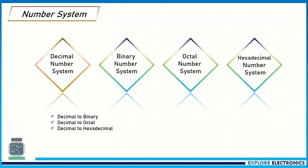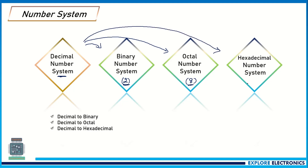First, let us see the rules behind conversion of a decimal number system to other number systems. If we need to convert a decimal number into binary, we need to divide the number by the base of the target system. For binary the base is 2, for octal we divide by 8, and for hexadecimal we divide by 16.